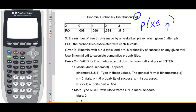So, X is the number of free throws made by a basketball player when given three attempts. The probabilities for each of these outcomes is listed. Given that X is a binomial with three trials and probability of success on any trial 0.8, we can use Binomial CDF to calculate cumulative probabilities.